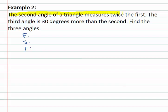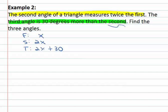We're told that the second angle is twice the first. Well, what's the first? We don't know, so we'll call the first our variable x. The second angle is twice that — to double something we multiply it by two, so 2x. Then we're told that the third angle is thirty degrees more than the second angle. So the third angle is thirty more, built by adding thirty to the second angle, and the second angle was just 2x — giving us 2x plus thirty.